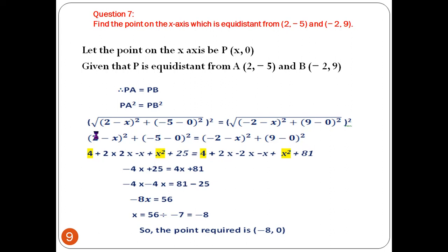The point is on the x-axis. Any point on the x-axis is of the form (x, 0), because the x-coordinate will be something but the y-coordinate on the x-axis is always 0. Therefore, we let the point be P with coordinates (x, 0).